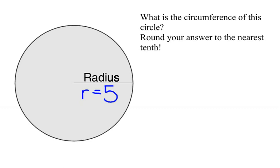The formula for circumference is C equals 2 pi r. C stands for circumference, r stands for radius.